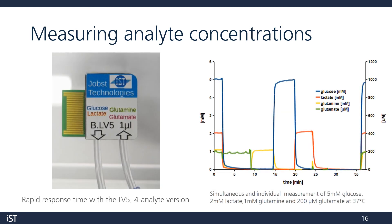Here is what your results might look like with the 4-analyte LV-5. We've pumped different analytes through the flow cell for simultaneous measurement. You can see how the sensor rapidly responds to concentration changes for each analyte. The included software with our transmitter is called Biomon, and it can be downloaded for free from the IST website.